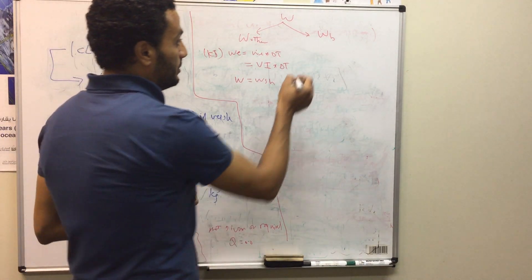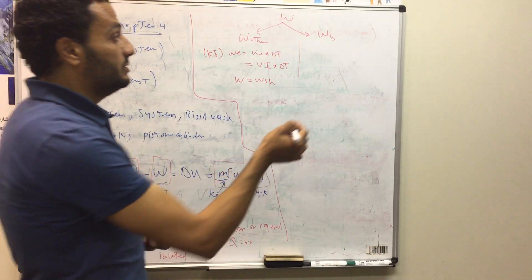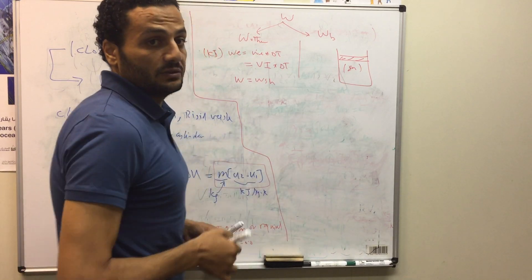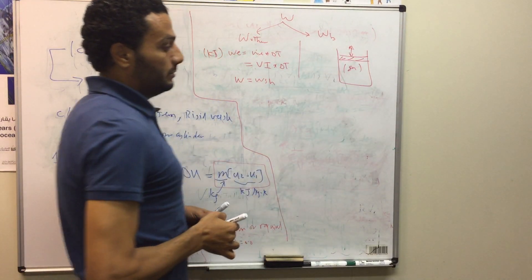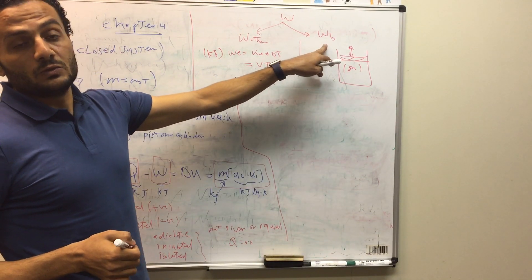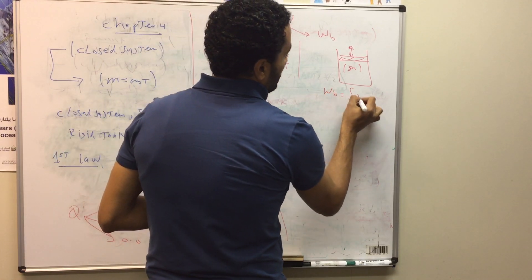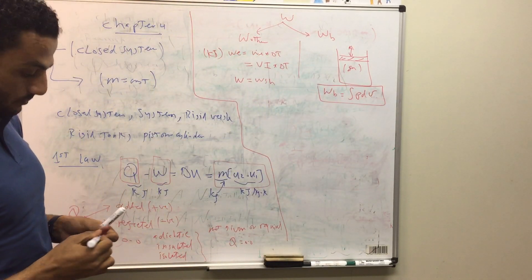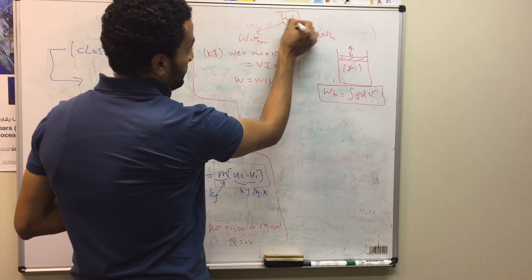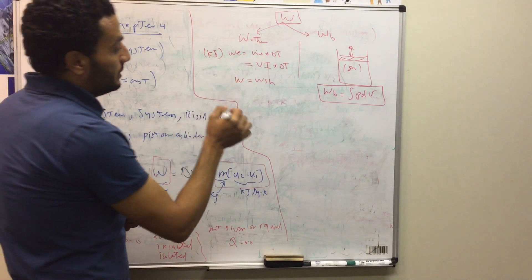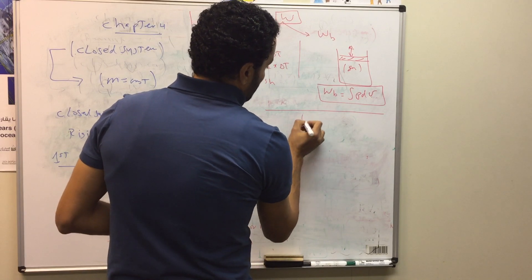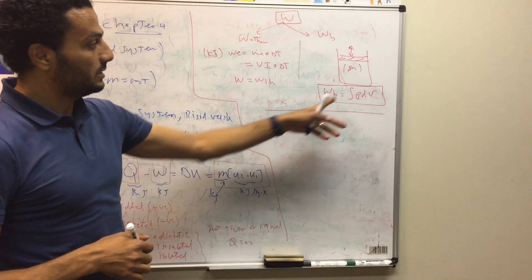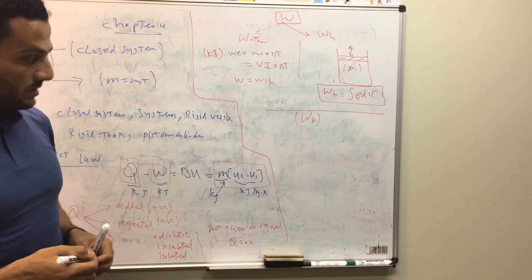In addition, we have boundary work — the work obtained when one boundary of the system is moving. This is the case when we have a gas or fluid inside a piston-cylinder device and the piston moves either upward or downward. Boundary work equals the integral of P dV. To calculate it, we need the relation between pressure P and volume V so we can perform this integration. As you can see, boundary work is a function of pressure and volume.